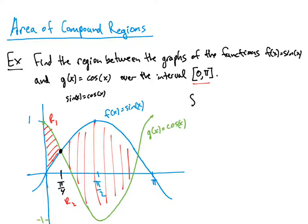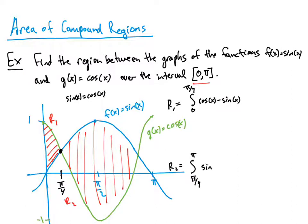Our first integral is from 0 to π/4. For R1, the function that is greater in the interval between 0 and π/4 is g(x), so we integrate cos(x) minus sin(x). For R2, the integral goes from π/4 to π, and in that interval f(x) is greater, so we integrate sin(x) minus cos(x). Both are with respect to dx.